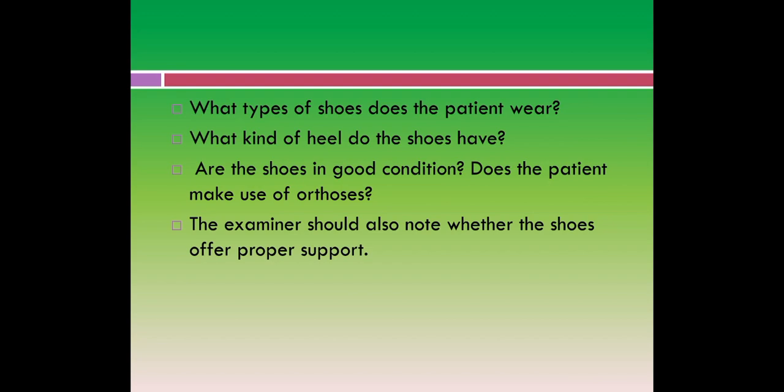We should ask what type of shoes the patient wears, what kind of heel the shoes have, whether the shoes are in good condition, and whether the patient uses an orthosis. Footwear plays an important role — in athletes, improper shoes can give rise to ankle sprains. We have to check whether the shoe is specific for the sport, and whether it has been modified according to the patient's condition, as improper shoe modification can increase the number of ankle injuries.